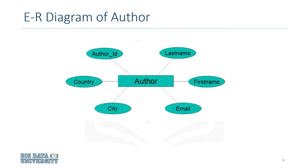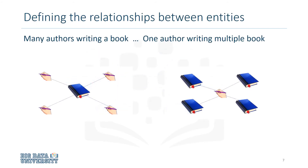Let's see how the entities book and author relate to each other. A book must be written by at least one author. However, a book can be written by two authors, and a book can be written by many authors. Similarly, one author can write just one book, or two books, or multiple books. In both cases, there is a relationship between the book and the author.